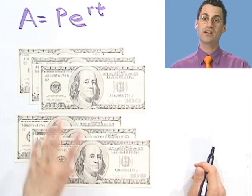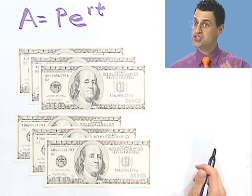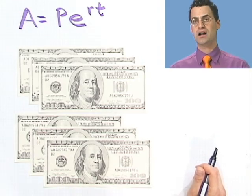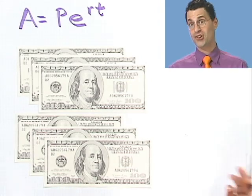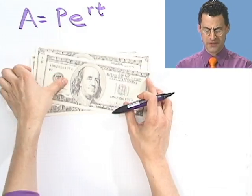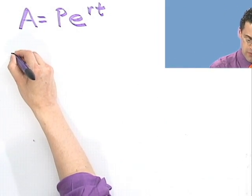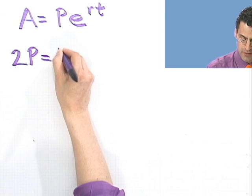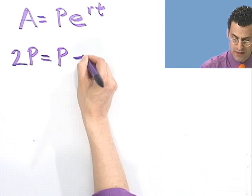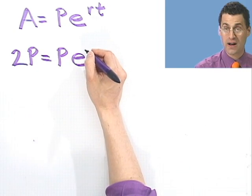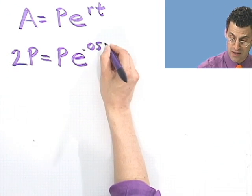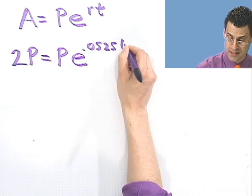So if you put in a quarter and you want to get 50 cents, you'll have to wait just as long as if you put in a billion dollars and you want to wait for 2 billion. Sorry. Anyway, let's actually figure that out for this particular account. So I want to double my money. So I want to have 2P at the end of the period. And I start with some P amount. And e and the rate I told you was 5 and a quarter percent. So that's .0525t.